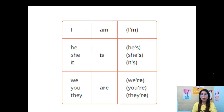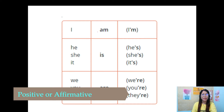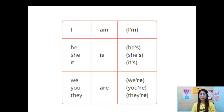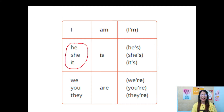We're going to start with the positive or affirmative sentences. We use 'I am' — subject first, then verb. The short form is 'I'm.' He, she, it takes 'is' — short forms: he's, she's, it's. We, you, they take 'are' — short forms: we're, you're, they're. Remember: pronouns he, she, it take singular 'is'; we, you, they take 'are'; and I will always take 'am.'